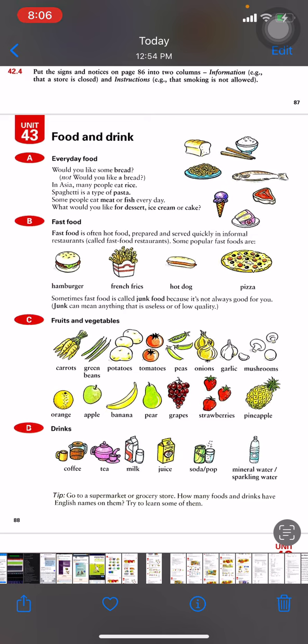Many people eat rice, so you don't use an article. Spaghetti is a type of pasta. Some people eat meat or fish every day - these are uncountable.